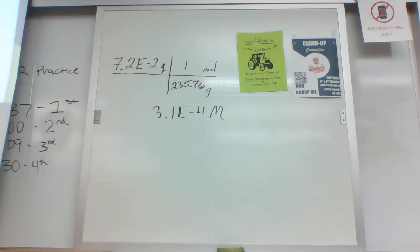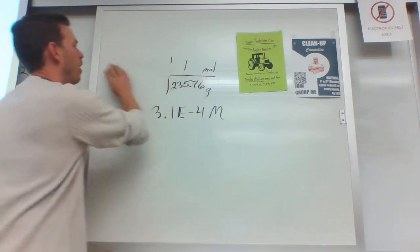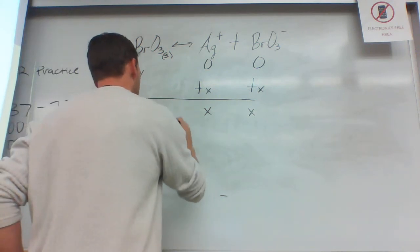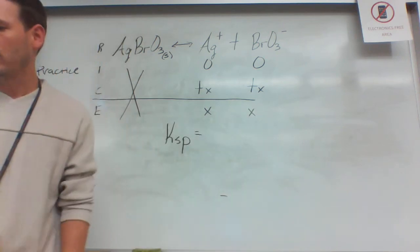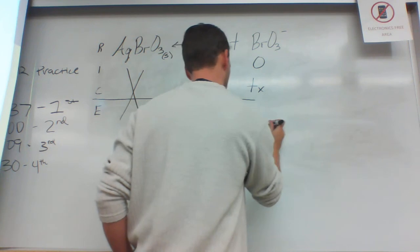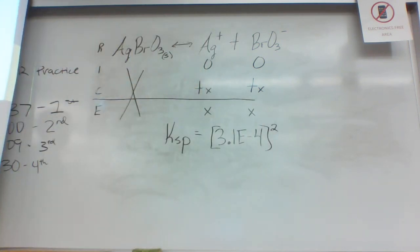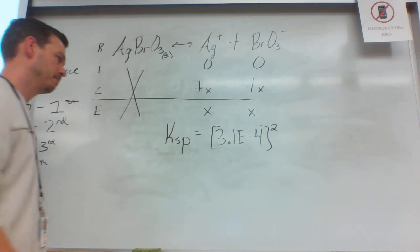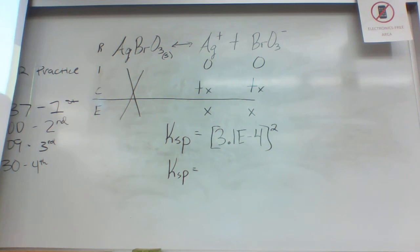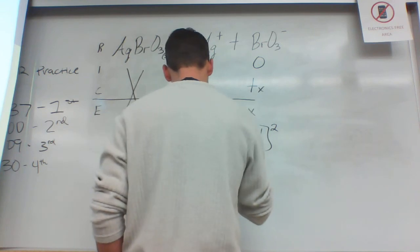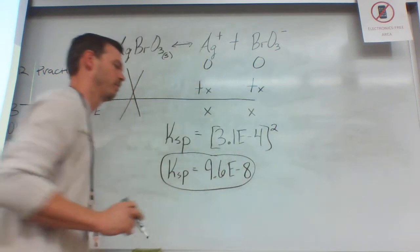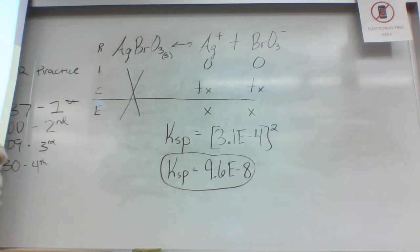So 3.1E-4 is my x. In other words, we're trying to find Ksp. So Ksp is going to be equal to that number times itself, right? So ultimately it's 3.1E-4 squared. Anybody want to share their Ksp value? 9.6E-8. There are no units for K. This is so easy, so stupid easy.